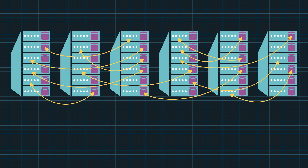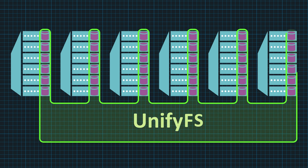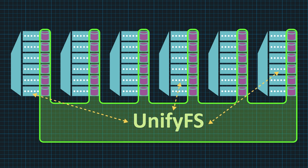To solve these problems, UnifyFS makes using fast, node-local storage as easy as using the parallel file system. When an application uses UnifyFS, its I/O operations are many times faster and avoid the slowdowns from contention and POSIX. It's like opening up a new private lane on the highway just for your application.